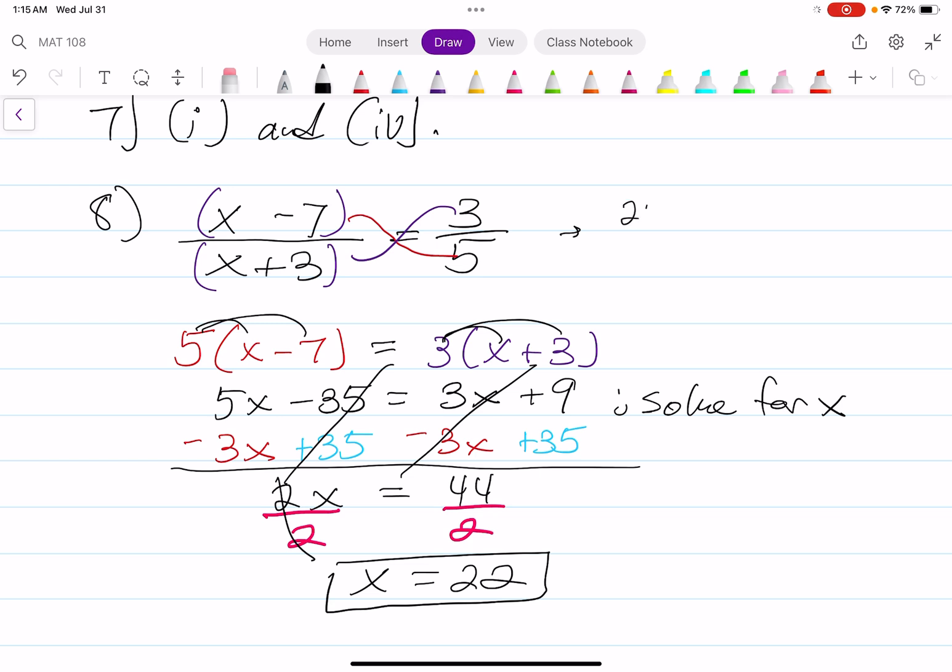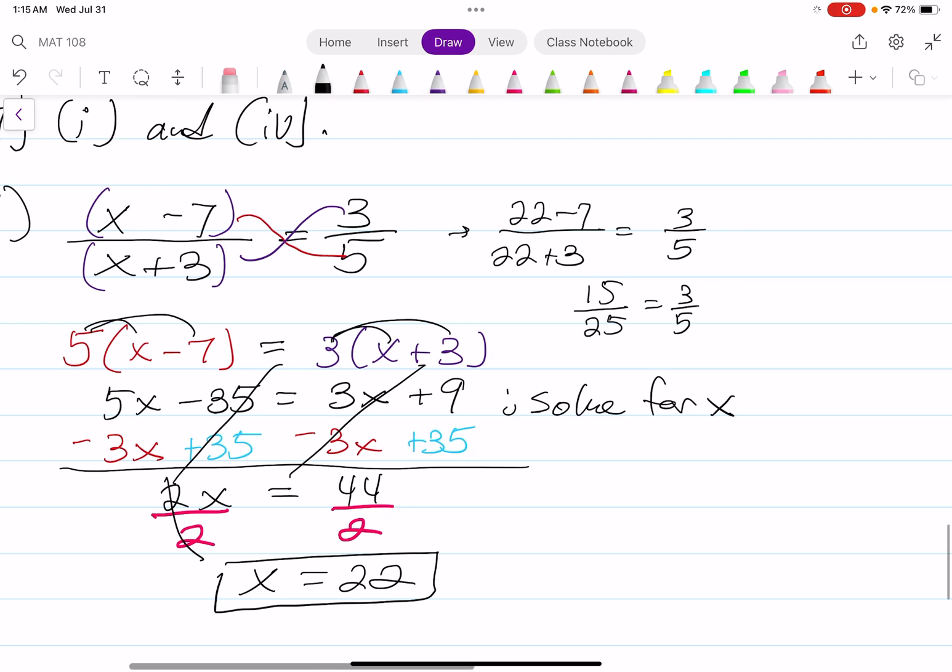22 minus 7 over 22 plus 3 equals 3 fifths. Let's see if that works. 22 minus 7 is 15, 22 plus 3 is 25 equals 3 fifths. To double check, you can cross multiply. 5 times 15 is 75, 25 times 3 is also 75. The answer of 22 works. I'm going to put here check and answer.